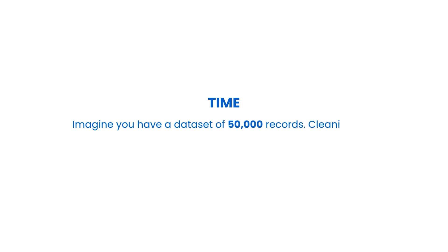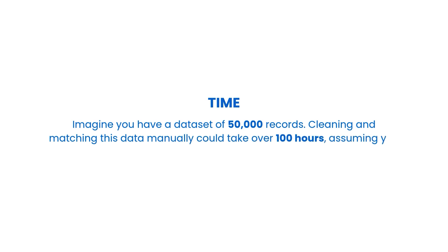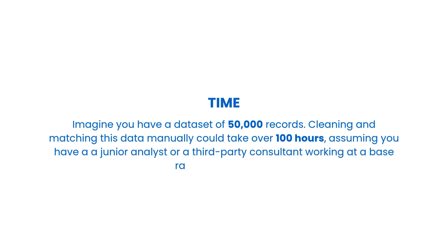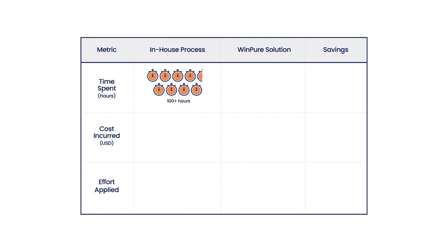Now let's talk about the bottom line — time and money. Imagine you have a data set of 50,000 records. Cleaning and matching this data manually could take over 100 hours, assuming you have a junior analyst or a third-party consultant working at a base rate of $50 an hour. With WinPure, that same task can be completed with greater accuracy in less than an hour — a 99% time savings, freeing up your team to focus on more strategic tasks.